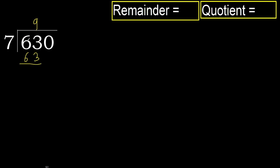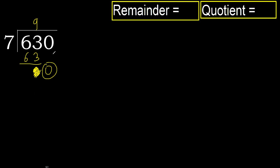Subtract: 63 minus 63 is 0. Next, bring down 0. 0 is less, therefore next.